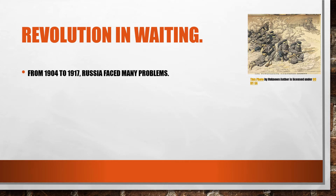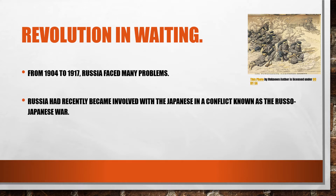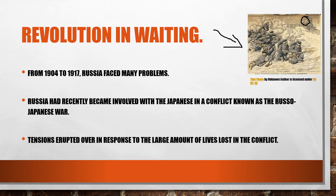From 1904 to 1917, Russia faced a lot of problems. Russia had recently become involved with Japan in a conflict known as the Russo-Japanese War. This picture shows Russian troops attacking a Japanese train — they were fighting over control of a railroad and territory. Russia technically lost this war, and many Russians were not happy with the outcome.